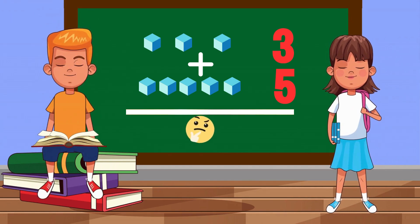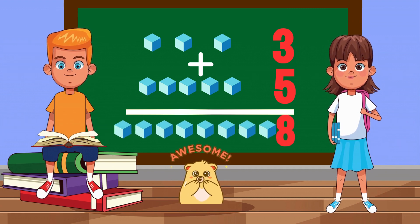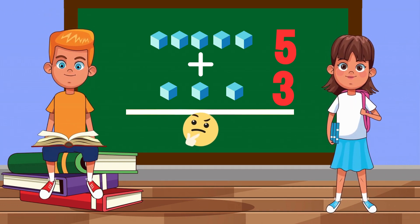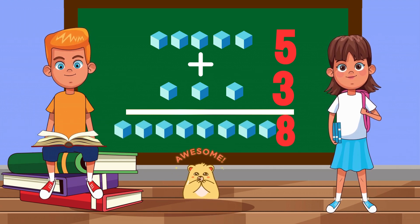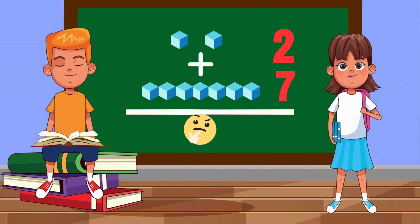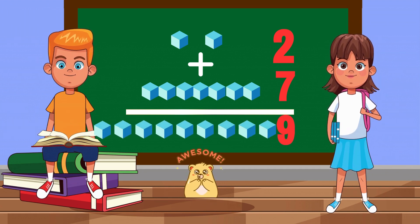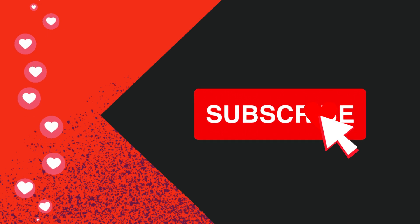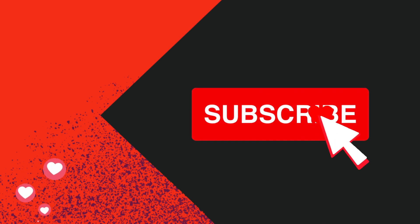3 cubes plus 5 cubes equals 8 cubes. 5 cubes plus 3 cubes equals 8 cubes. 2 cubes plus 7 cubes equals 9 cubes.